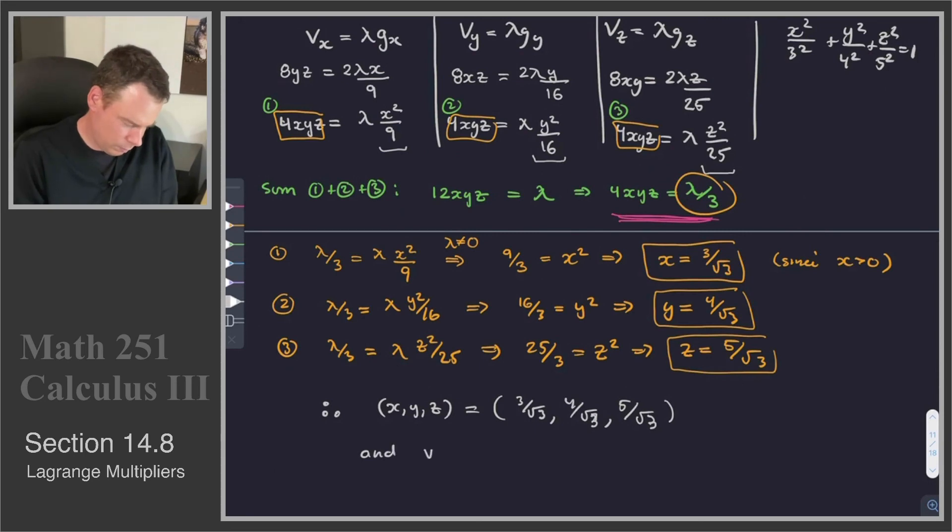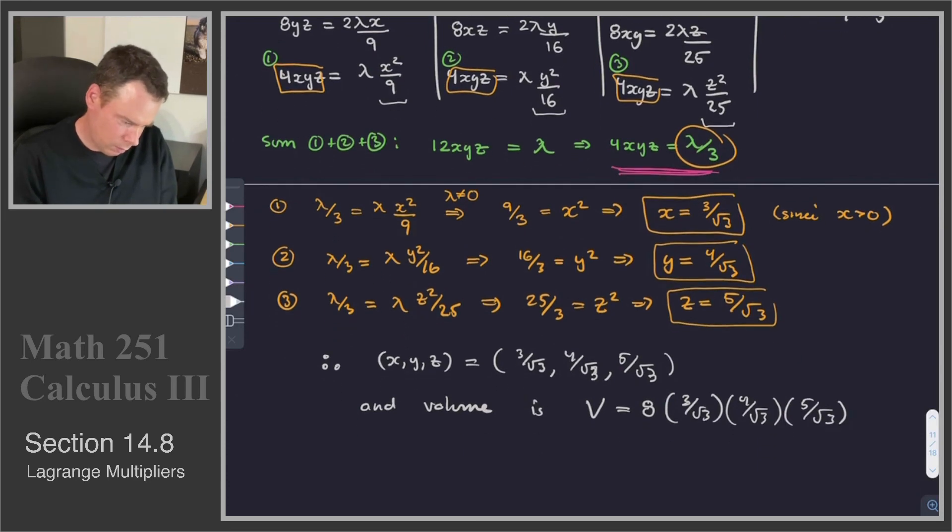And so that becomes 60/3√3. And the volume, so these are the dimensions of the box, and the volume is given by 8 times the product, 3/√3 times 4/√3 and 5/√3.